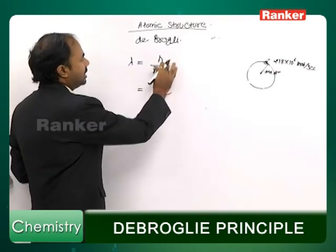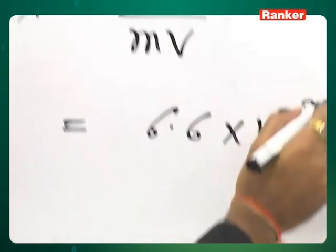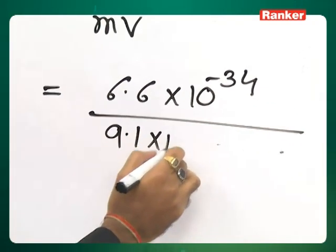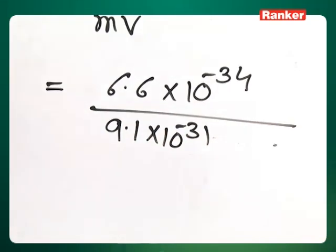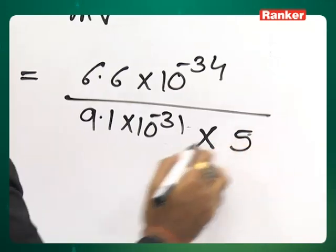Lambda will be equal to h which is 6.6 into 10 to the power minus 34 upon m is 9.1 into 10 to the power minus 31 kg. And velocity, we can put anything if we assume it is moving with a speed of 5 meter per second.